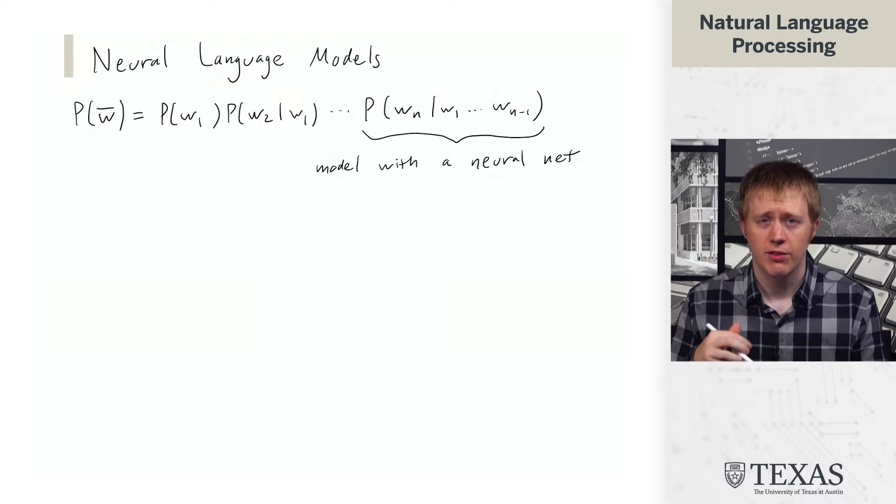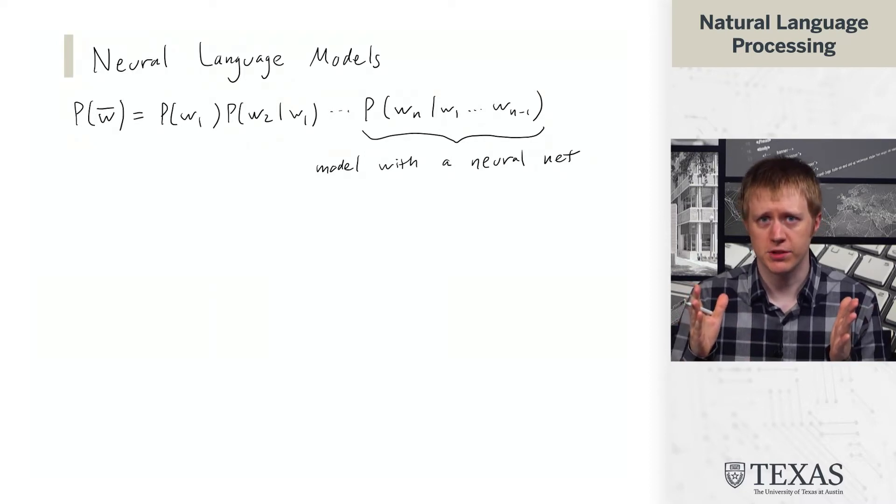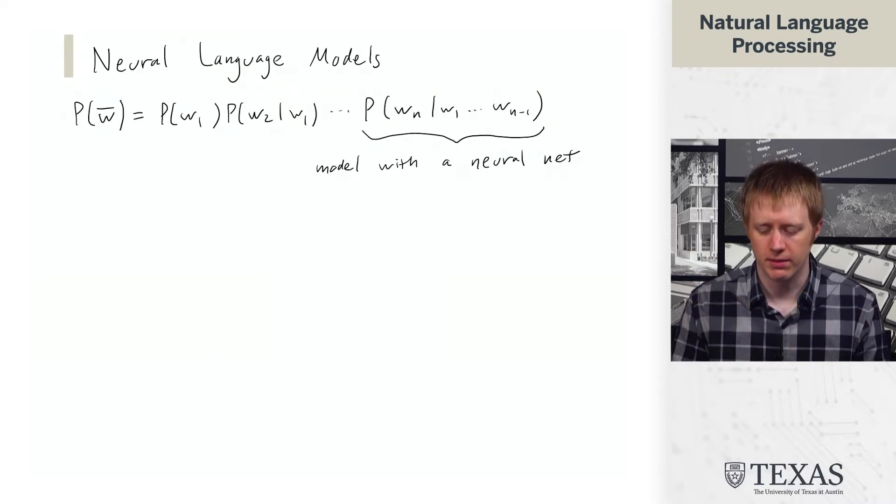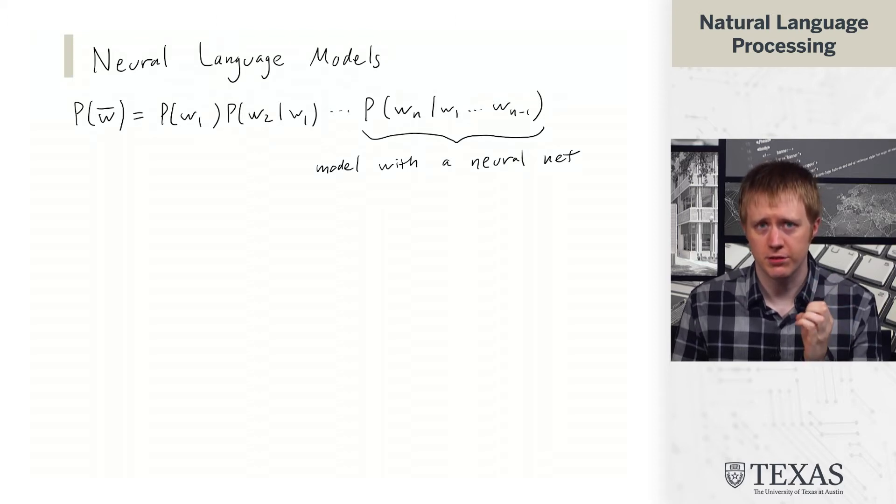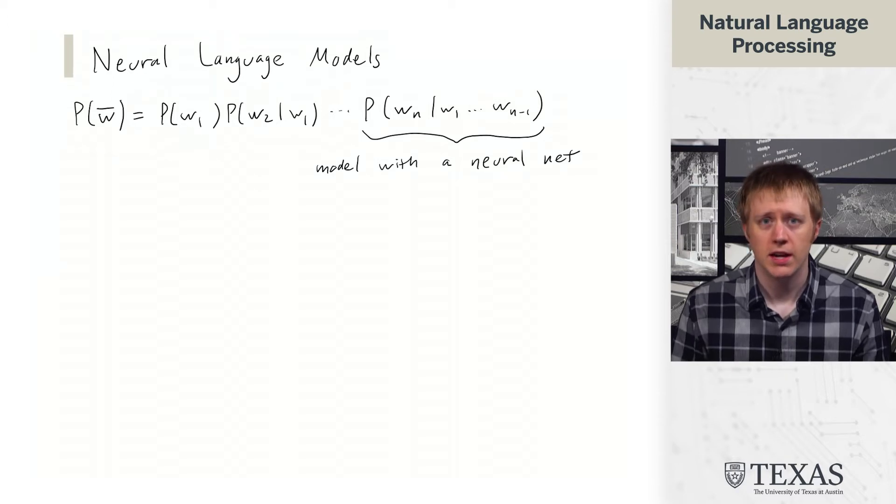and so on and so forth. For n-gram language modeling, we made the assumption that only the previous n-1 words matter. We're not going to make that assumption anymore. Instead, what we're going to say is how can we model this distribution P of Wn given W1 through Wn-1 in a smarter way?